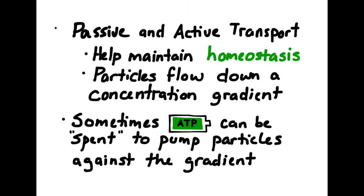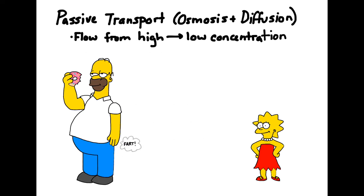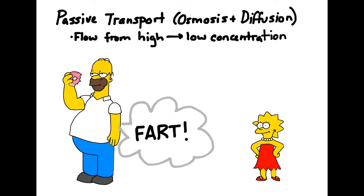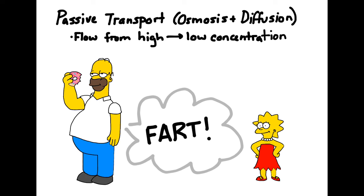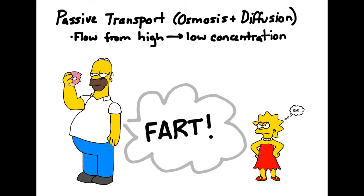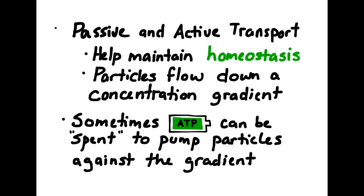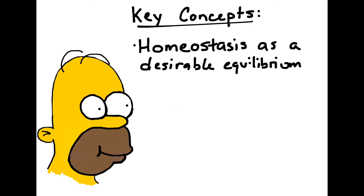Both passive and active transport can be used to help maintain homeostasis. In passive transport, such as osmosis and diffusion, particles flow from an area of high concentration to an area of low concentration and can very effectively fill a space. If deviation from a set point has been detected, ATP can be spent in order to pump particles against the concentration gradient and restore homeostasis.